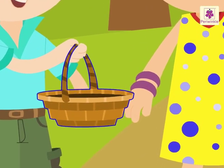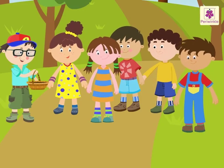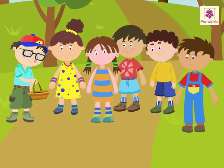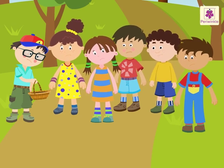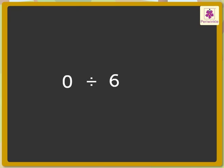There are six kids and no apples, so each kid gets zero apples as there are no apples here. Simply, we divided the number zero by six and got the answer zero. Thus, when zero is divided by a number, the quotient is zero.